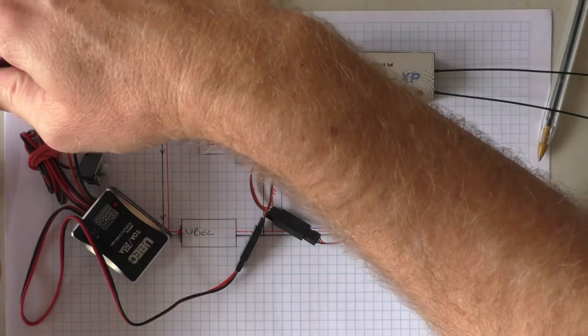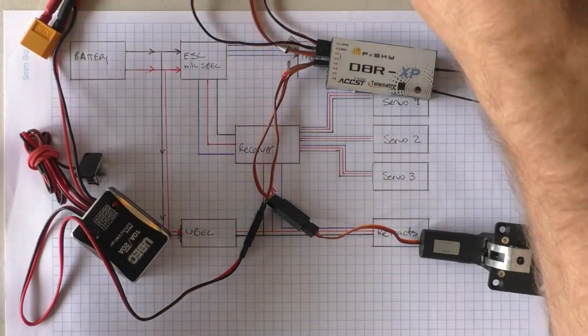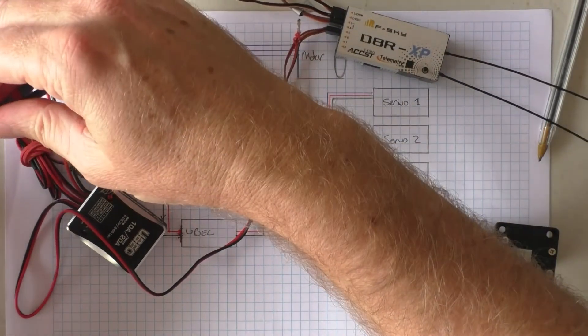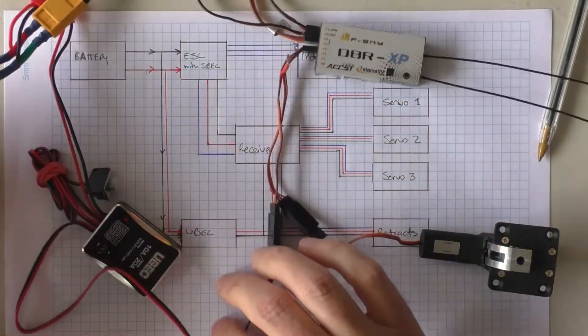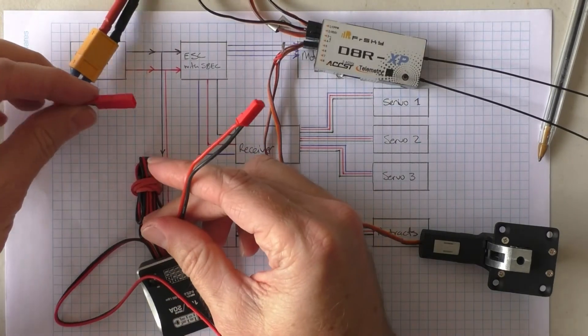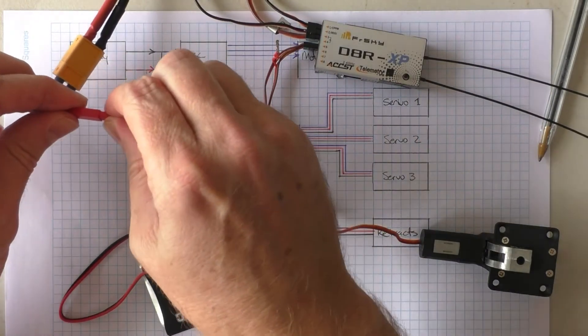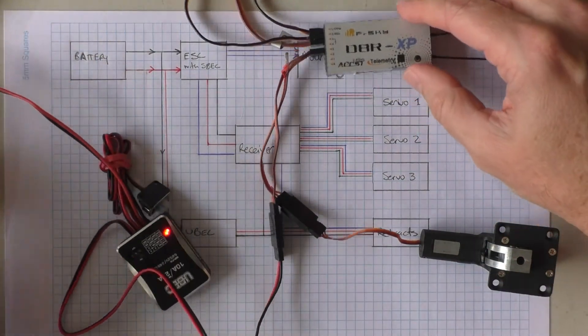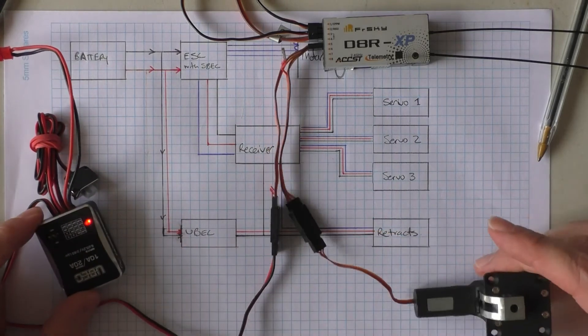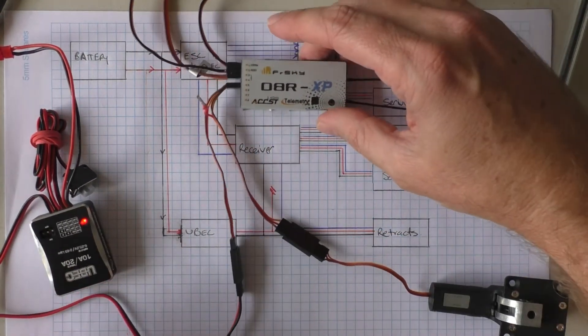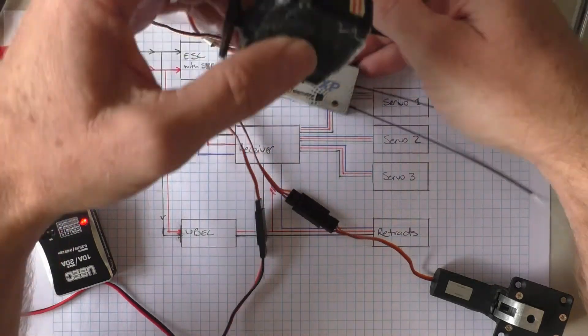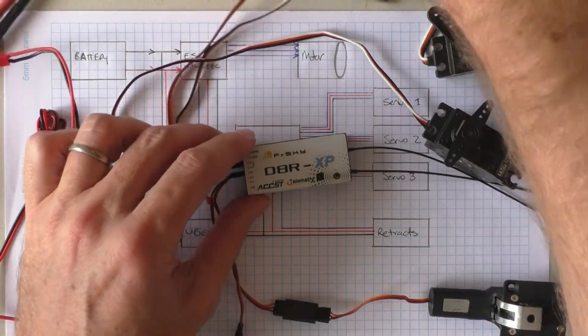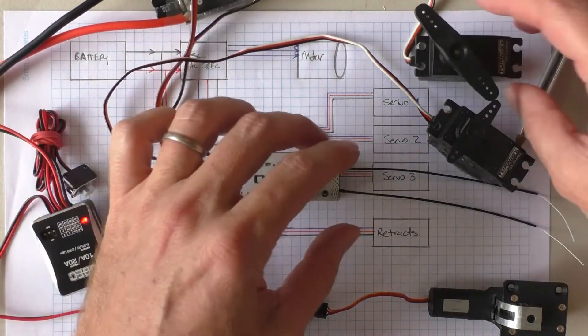I now need to get power to the UBEC. And we're doing that by tapping off the power here. So, we should be up and running. Everything should now be working. My UBEC is powered up, my retract is down here, my receiver's here, and my servos are here. And obviously the ESC is sitting at the top there. So, let's have a look.